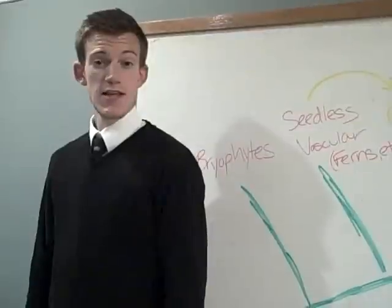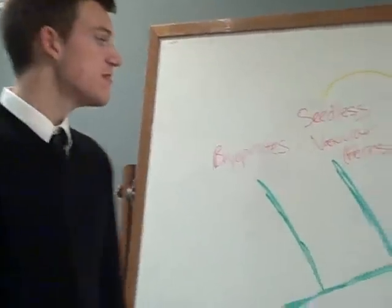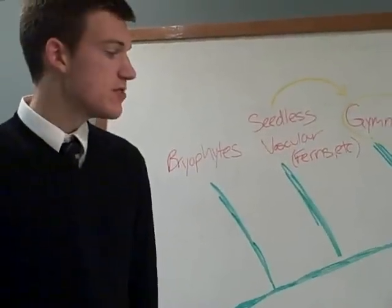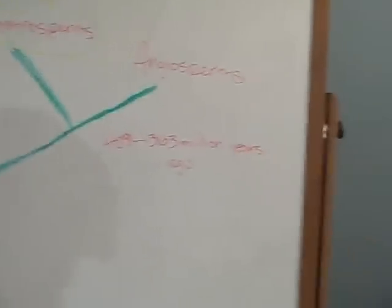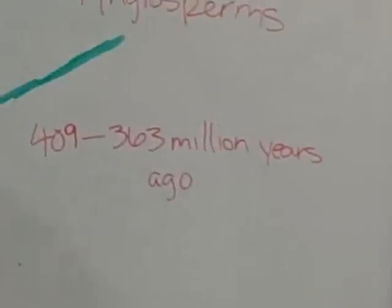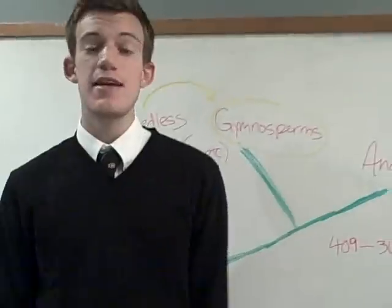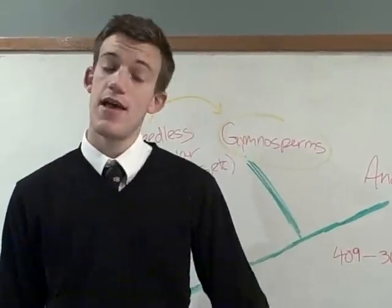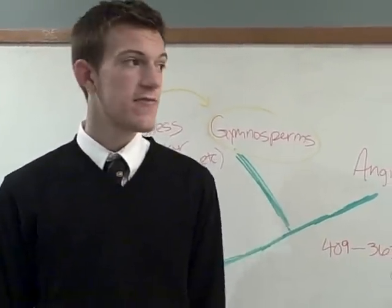You may think that gymnosperms have been here forever, but you'd be wrong. Let's take a look at their roots. Gymnosperms evolved from a fern relative somewhere between 409 and 363 million years ago. However, it wasn't until 225 million years ago that they established dominance over the entire planet. In fact, they were the primary source of food for dinosaurs.